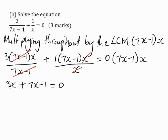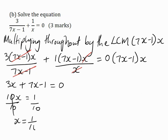So 3x plus 7x is 10x. Take the minus 1 across the equal sign — it becomes positive. Divide by 10, and x is equal to 1 over 10.